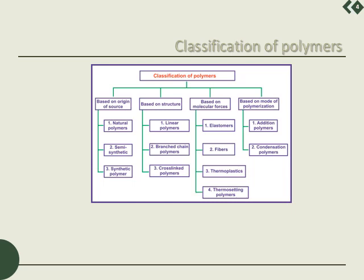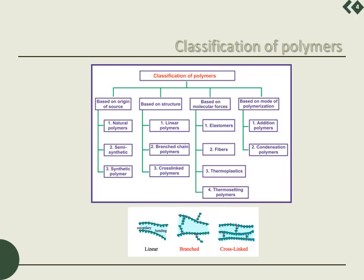Based on the structure, we have linear polymers — the adjoining figure shows how a linear polymer looks. Then we also have branched polymers, where branches also exist. In linear polymers, one single long chain exists, whereas in branched polymers, the long chain is associated with sub-branches. Then there are cross-linked polymers, where those branches are interlinked. Based on molecular forces, we have thermoplastic polymers, thermosetting polymers, elastomers, and fibres.